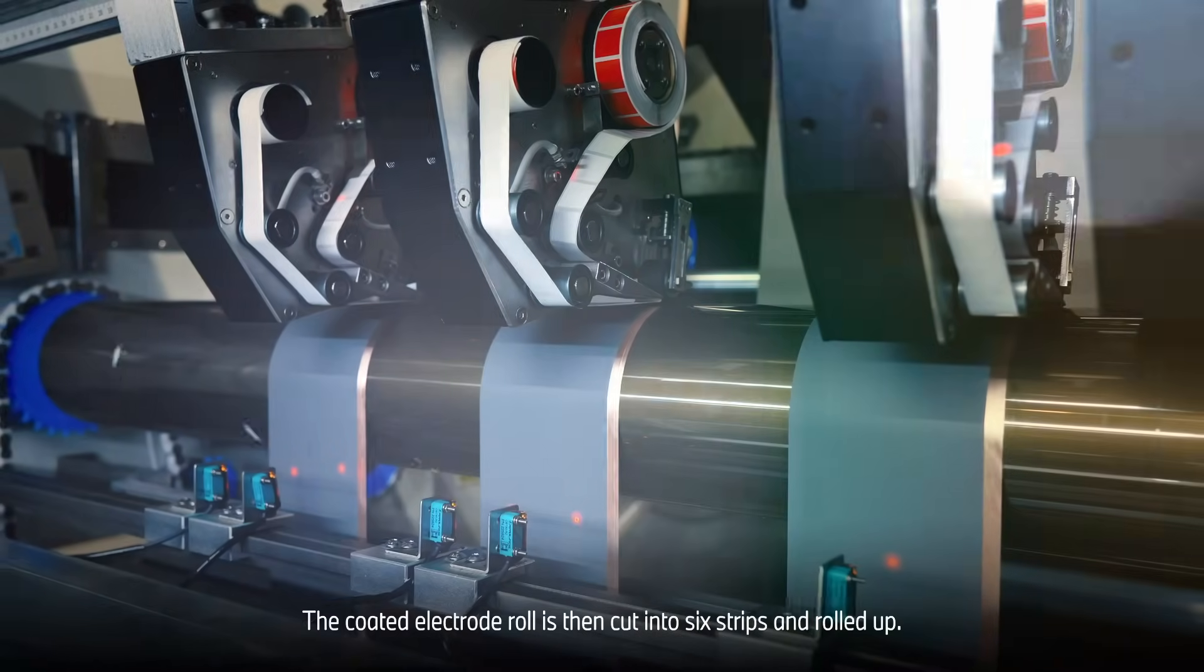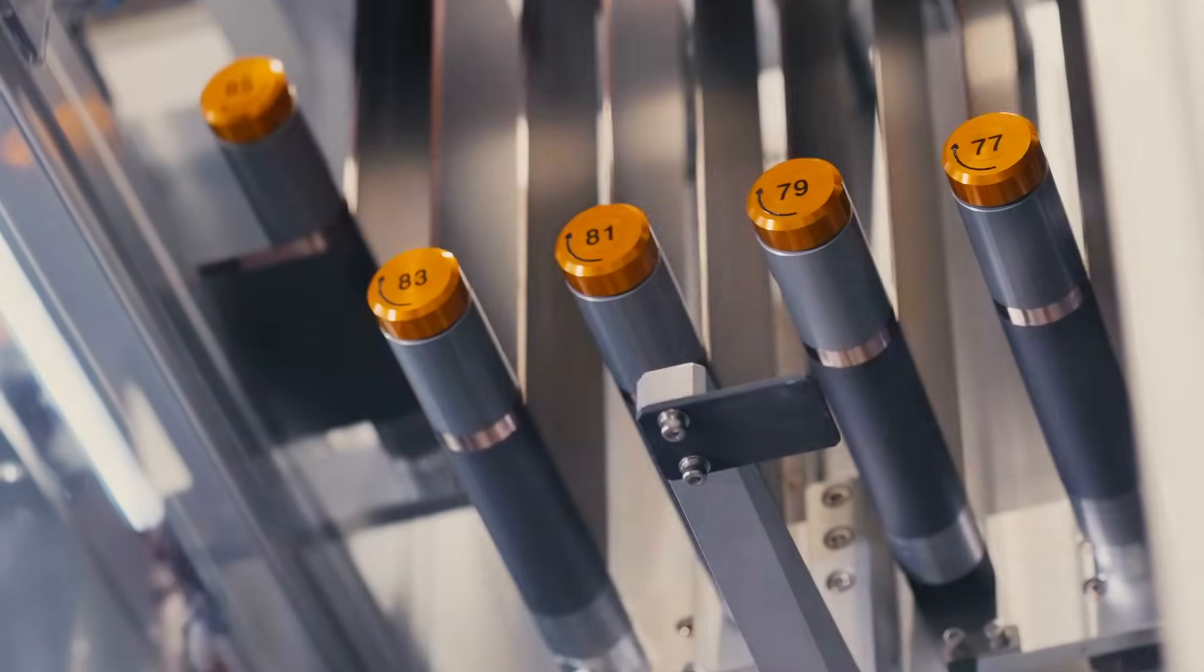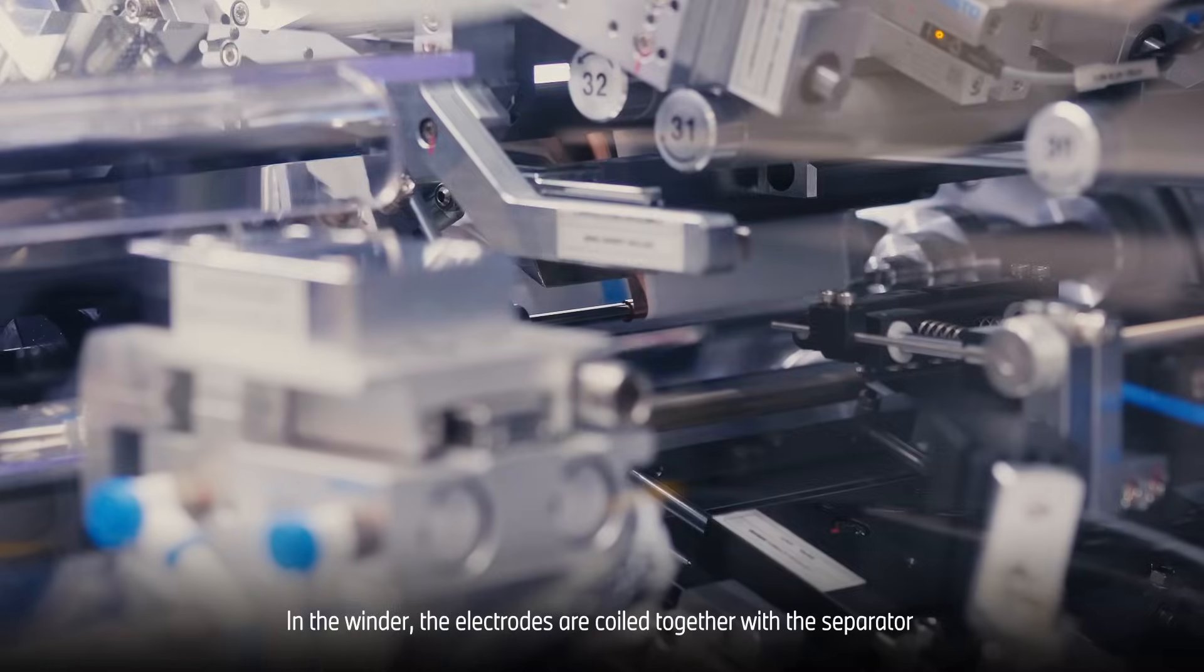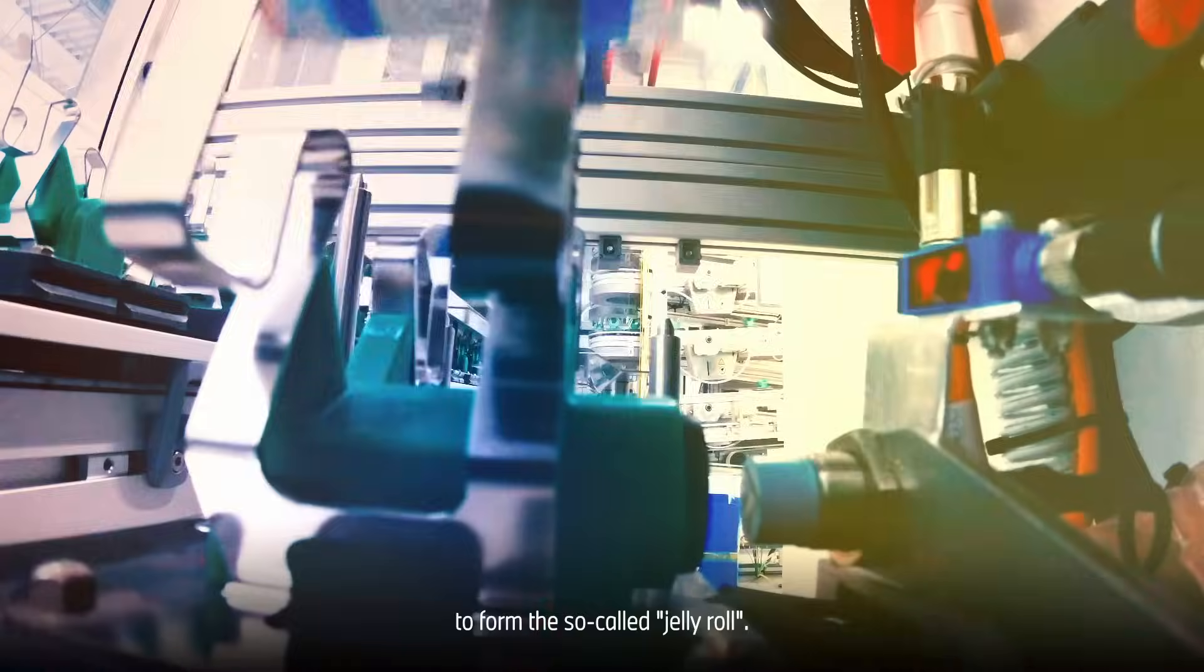The coated electrode roll is then cut into six strips and rolled up. In the winder, the electrodes are coiled together with the separator to form the so-called jelly roll.